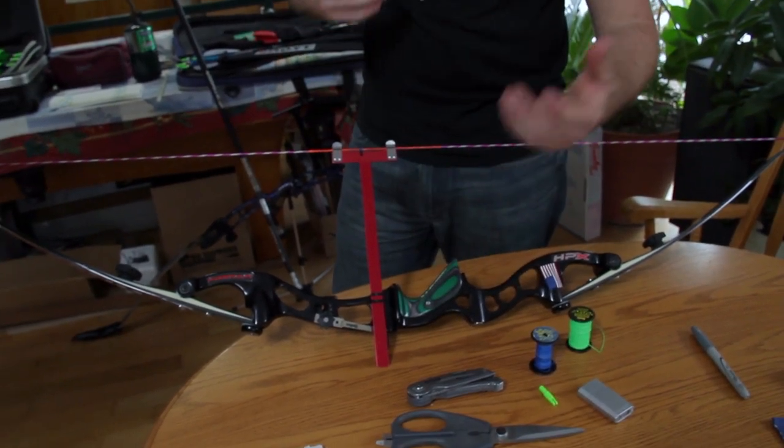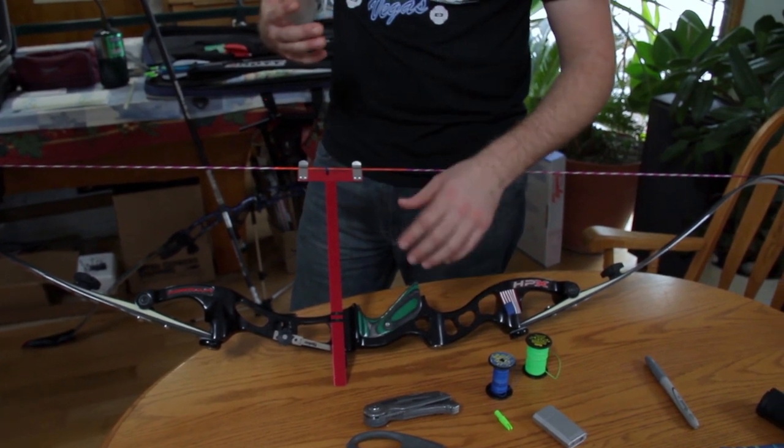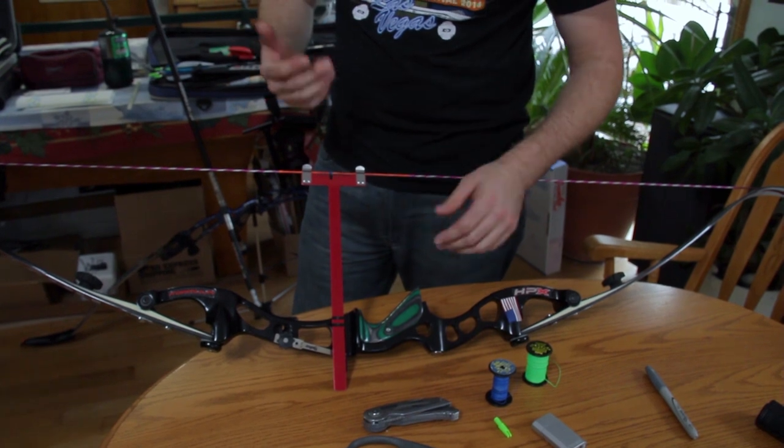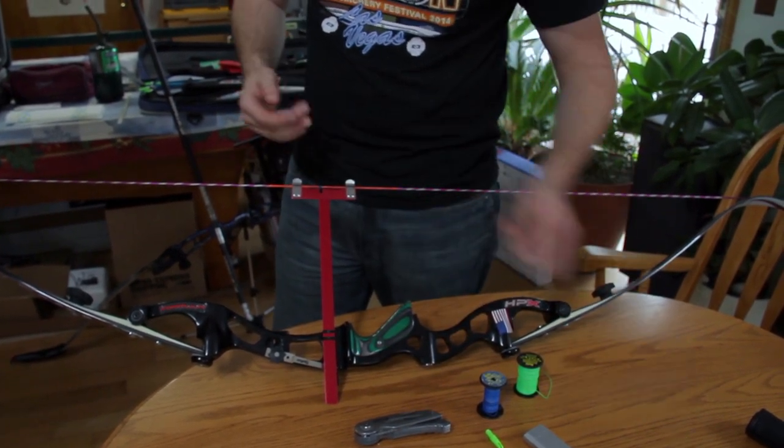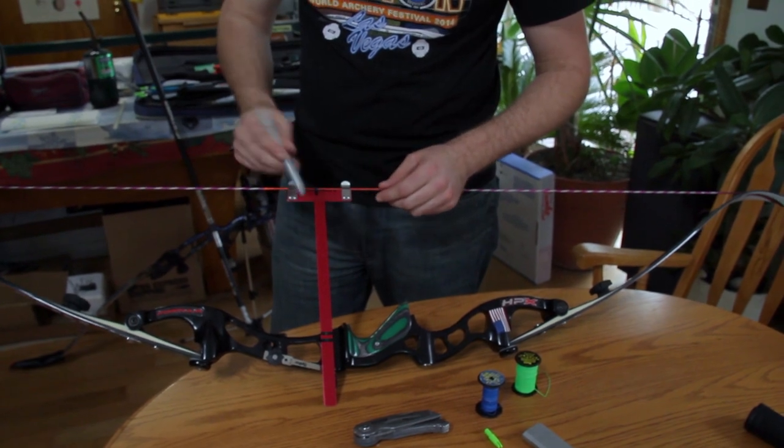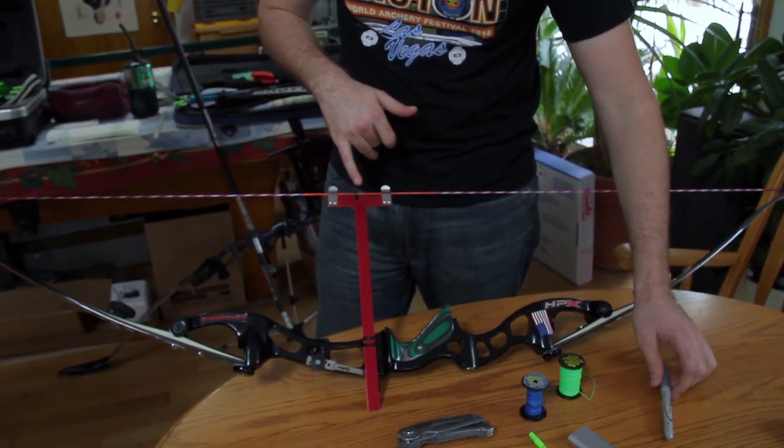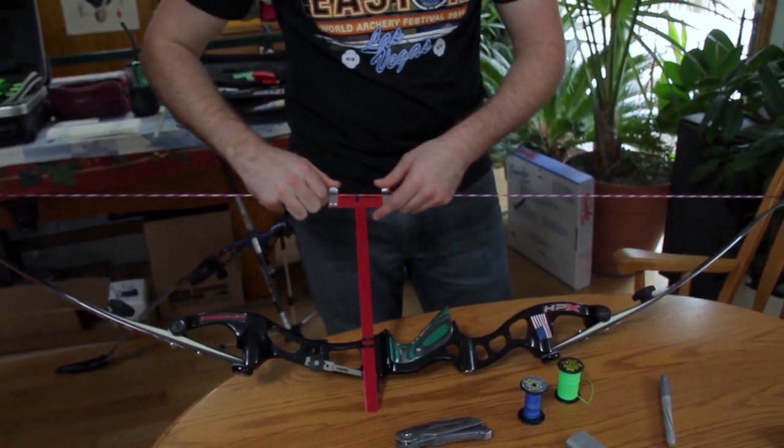Now note, your knocking point will change if you go and tune your bow and you change your brace height and such and your tiller. That will affect your knocking point so you would then have to redo it. But from here, you may want to mark with a marker the point you wish to put your knocking point on. You would then remove your bow square.